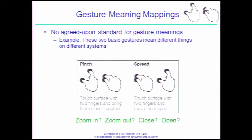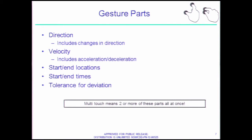The next thing to talk about is gesture meaning mapping. There really isn't an agreed-upon standard yet — the iPhone and Google Android do things differently. Some gestures that you'd expect to do the same thing on one device do different things on the other. iPhone and Android are the two big players, but there's no agreed-upon standard. People expect whatever they use the most — iPhone users expect the iPhone way, Droid users expect the Droid way. We're studying this.